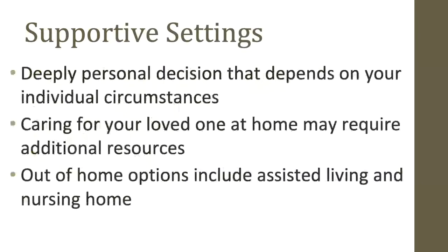This brings up the question of where to best care for your loved one throughout their illness. The decision is a difficult one and requires an honest evaluation of your resources and support. People with FTD need a safe, structured environment, and if your home isn't set up this way, you may need to consider remodeling to provide better access in the bathroom or a bedroom on the first floor. If you're caring for your loved one at home and they are ambulatory but require a high level of supervision, an adult day center may be a good choice. For individuals with advanced FTD who require increased levels of care, you may need to find a home health aide or a nurse to help with care activities.